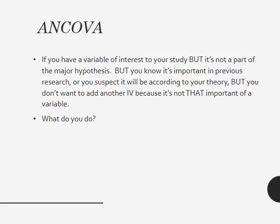An ANCOVA is appropriate when you have a variable of interest to your study but it's not part of your major hypothesis. You know from previous research that it's probably important, or you suspect according to theory that it's important, but you don't want to add yet another independent variable because that gets more and more complicated. Even a two-way ANOVA is complicated, much less adding multiple covariates. Statisticians were looking for simple ways to include additional predictor variables without having an eight-way ANOVA, so they said: let's put covariates in there.